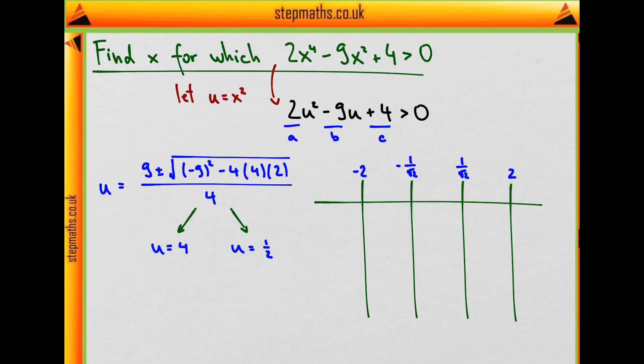And on a number line, those are now four different points. It's infinity and negative infinity. And as we said, the sign of this polynomial possibly changes at these four points.